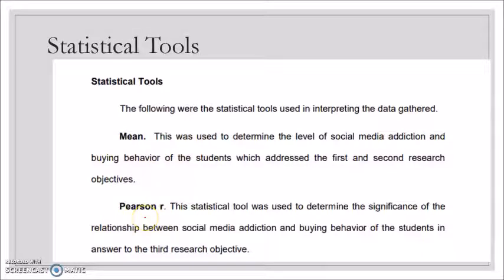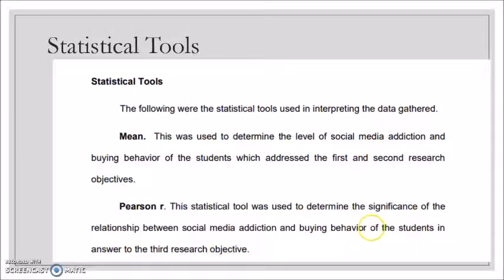Pearson r is used to determine the significance of the relationship — it is a test of correlation. This statistical tool was used to determine the significance of the relationship between your first variable and your second variable, in answer to the third research objective: to determine the significance of the relationship between the two variables. These are the two statistical tools used for a correlation study.